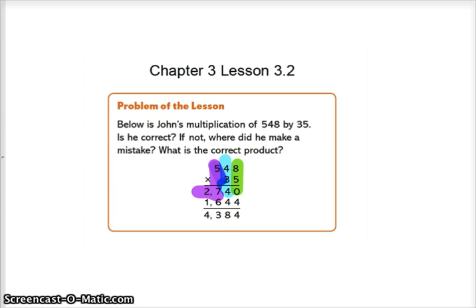5 times 5 is 25, plus the 2 is 27. So we put our 27 down here.